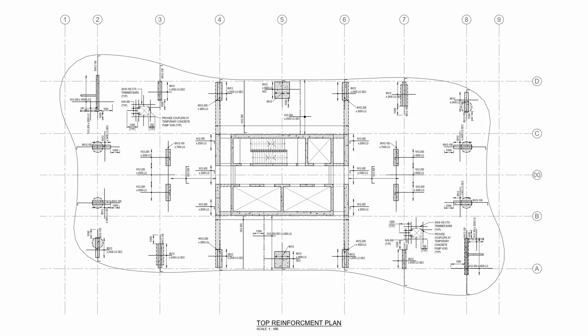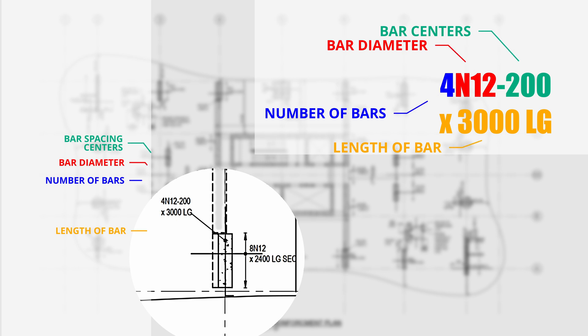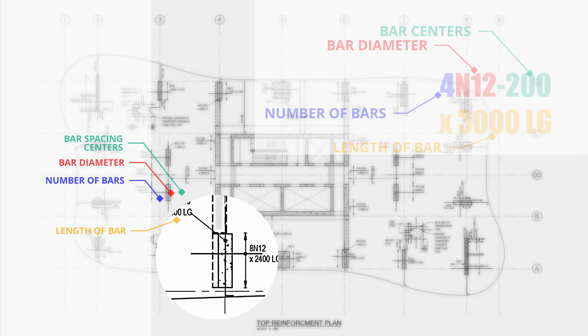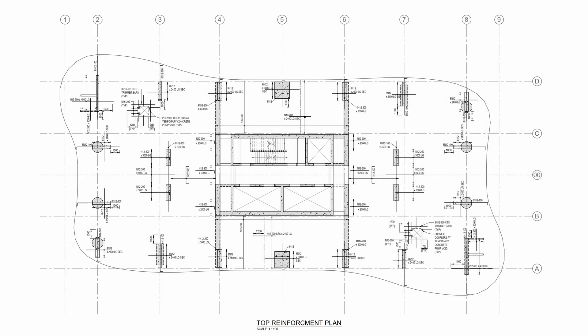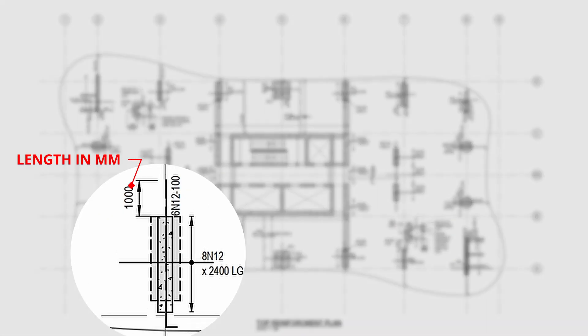For the top reinforcement mat, similar to the bottom reinforcement, you call out the bar size — for example N12s — and the number of bars and centers required. Extent lines are used to show that reinforcement extends a certain distance from the edge of the column, rather than calling up a specific length, as what matters is that bars extend beyond a certain location.